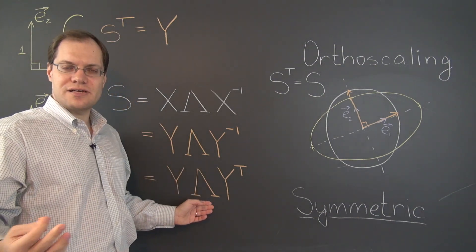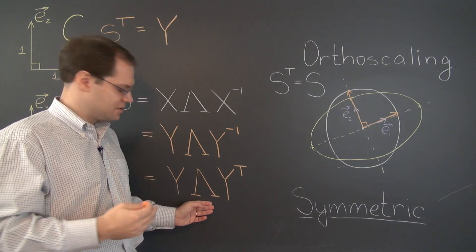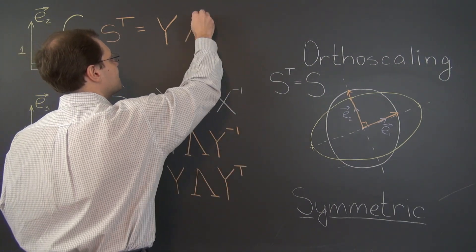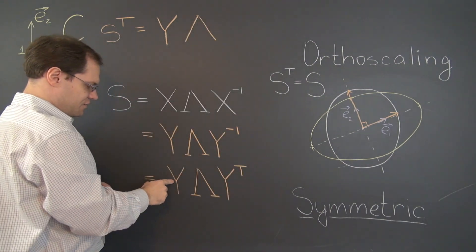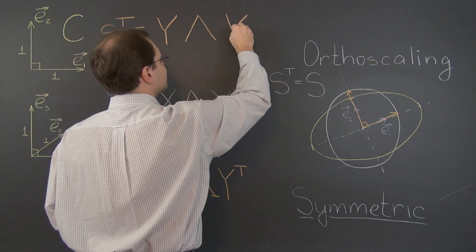A diagonal matrix is actually symmetric. The transpose of a diagonal matrix is itself because it is symmetric. So we have lambda. And then finally the transpose of this matrix is Y transpose. Excellent.